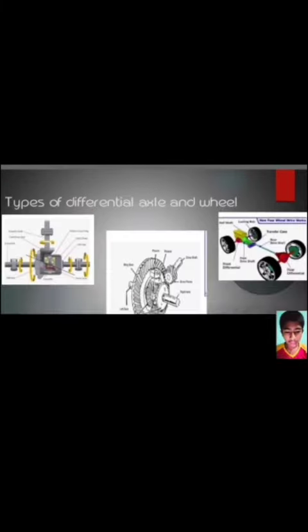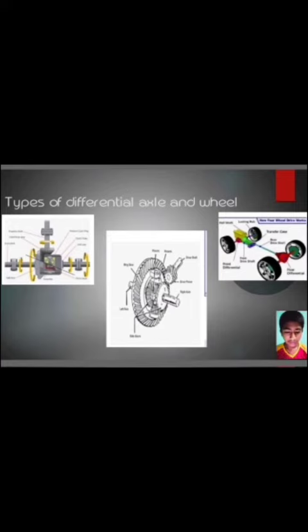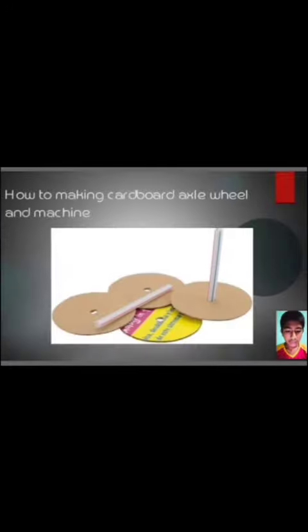The title of the project: Prepare a working model using cardboard or other material of differential axle and wheel and calculate the velocity ratio of it. Type: differential axle and wheel. See the diagram given in how to make cardboard axle, wheel, and machine.